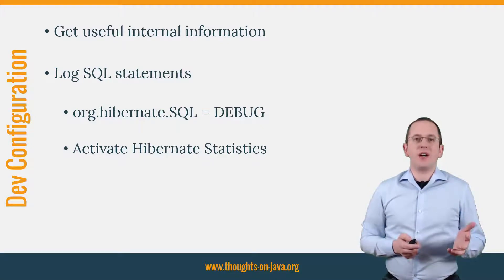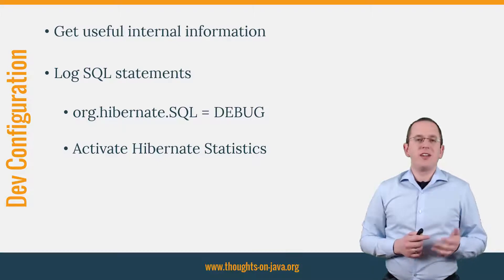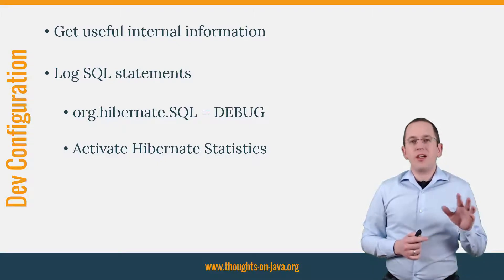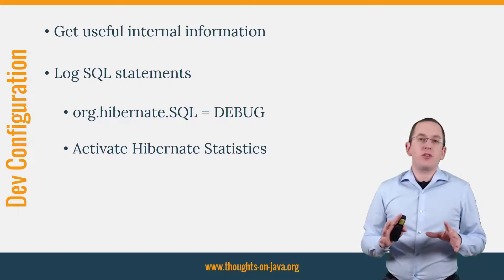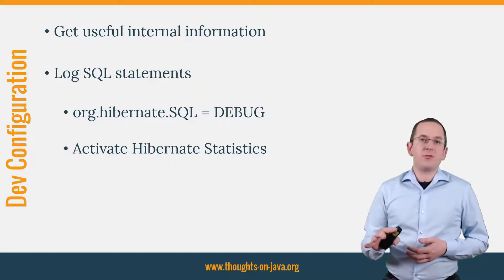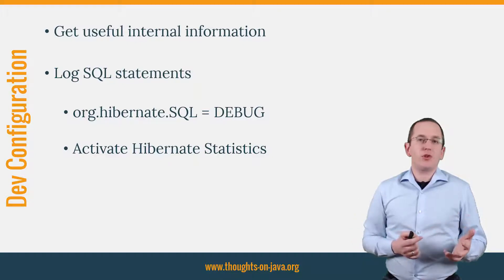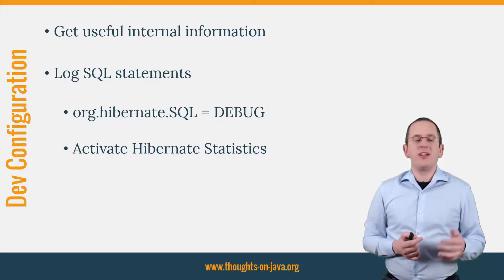OK, let's finally talk about my recommendations for a development configuration. The main goal is to get useful internal information about the database interactions. Hibernate is doing a lot of things for you in the background, and that makes it easy to forget that you are still working with the database. But if you want to make sure that your application will perform as expected, you need to check the number of executed queries and their SQL statements. To get this information, you need to set the log level of the org.hibernate.sql category to debug. I also prefer to activate Hibernate statistics to get a summary of the most important metrics at the end of the session.